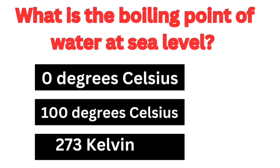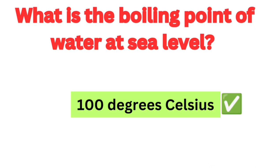What is the boiling point of water at sea level? 0 degrees Celsius, 100 degrees Celsius, 273 Kelvin. Answer: 100 degrees Celsius is the correct answer.